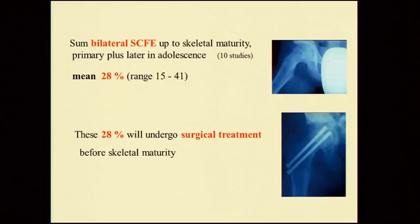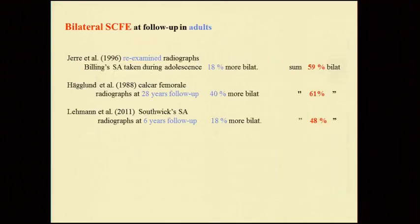The sum of bilateral slipping up to skeletal maturity — primary plus later in adolescence — from 10 studies varied from 15 to 41 percent, with a mean of 28 percent. These 28 percent will undergo surgical treatment before skeletal maturity. We are now talking about the remaining 72 percent, if we believe these figures.